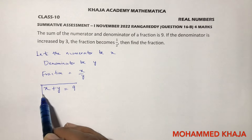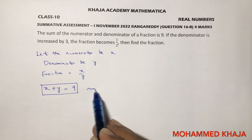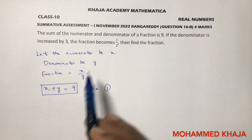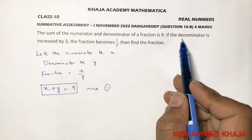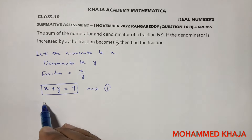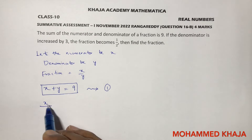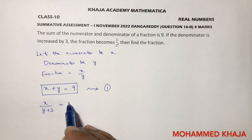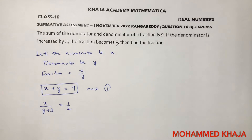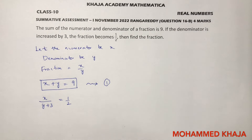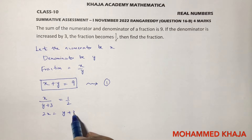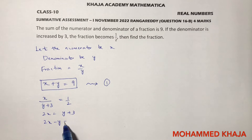This is the first equation. Next, if the denominator is increased by 3, the numerator stays as it is. The fraction becomes 1 by 2, so cross multiplying gives 2x equals 1 into y plus 3. Therefore 2x minus y equals 3. This is the second equation.